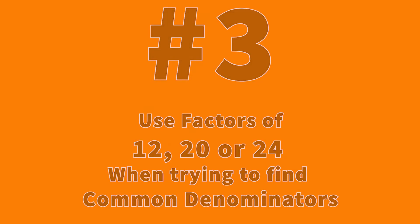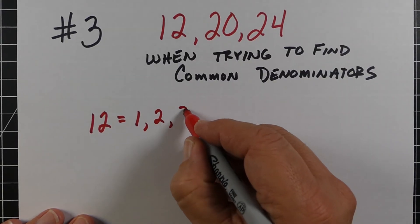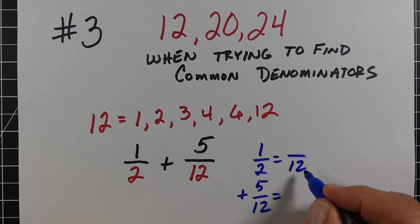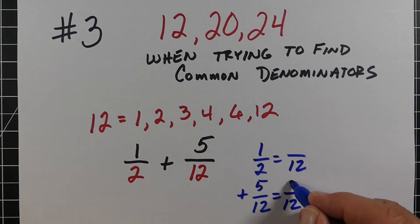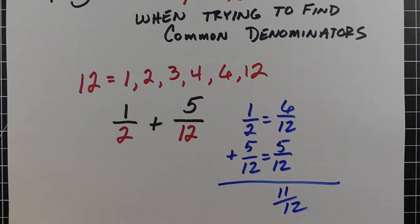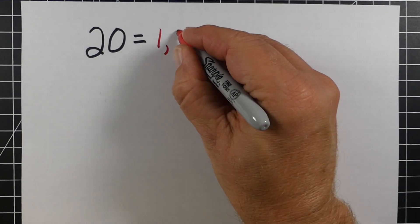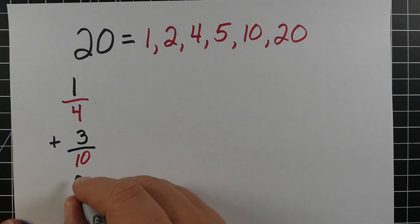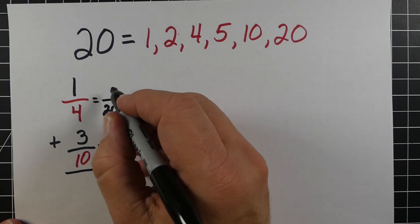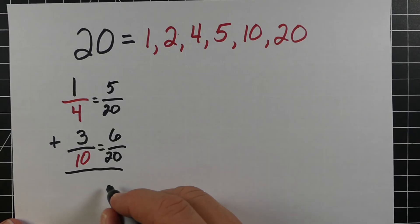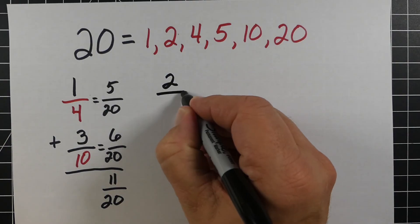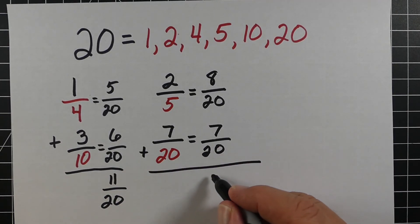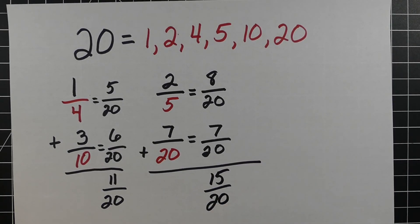The third tip: use factors of 12, 20, or 24 when working with fractions. For example, the factors of 12 are 1, 2, 3, 4, 6, and 12. Using those numbers as denominators, the common denominator will be 12, and it's easy to find the numerators and add them up. Similarly, the factors of 20 are 1, 2, 4, 5, 10, and 20. Using 4 and 10, for instance, the common denominator is 20 — 4 times 5 is 20, so multiply the numerator by 5. It's easier when you pick denominators that are common factors of a certain number. This last example gives 15/20, which simplifies to 3/4.